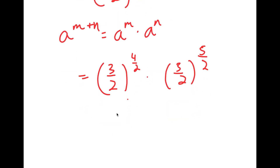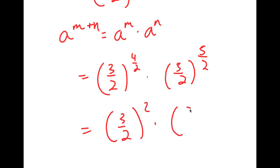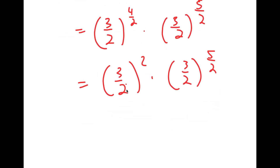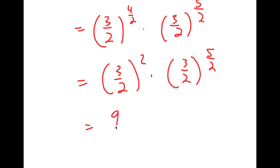Now, 4 over 2 is equal to 2. So I get 3 over 2 to the power of 2 times 3 over 2 to the power of 5 over 2. And 3 over 2 squared is equal to 9 over 4. So I get 9 over 4 times 3 over 2 to the power of 5 over 2.